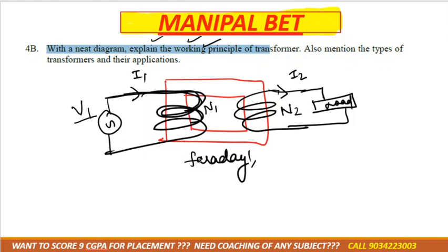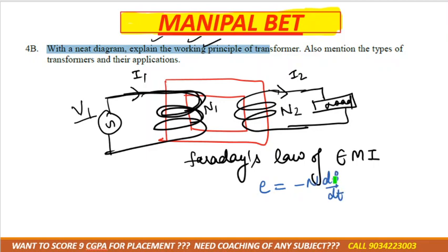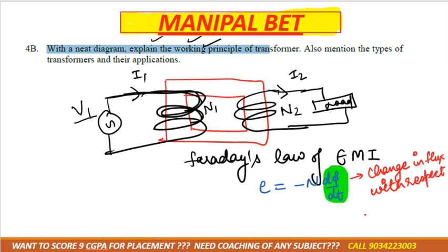According to Faraday's law of electromagnetic induction, EMF is equal to minus N dΦ/dt — that is, the change in flux with respect to time. If there is a change in flux with respect to time, then only EMF will be induced; otherwise no EMF will be induced.